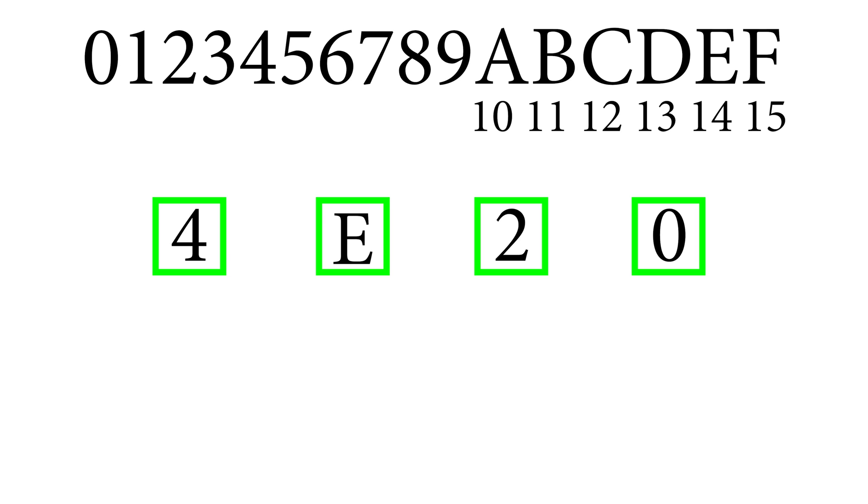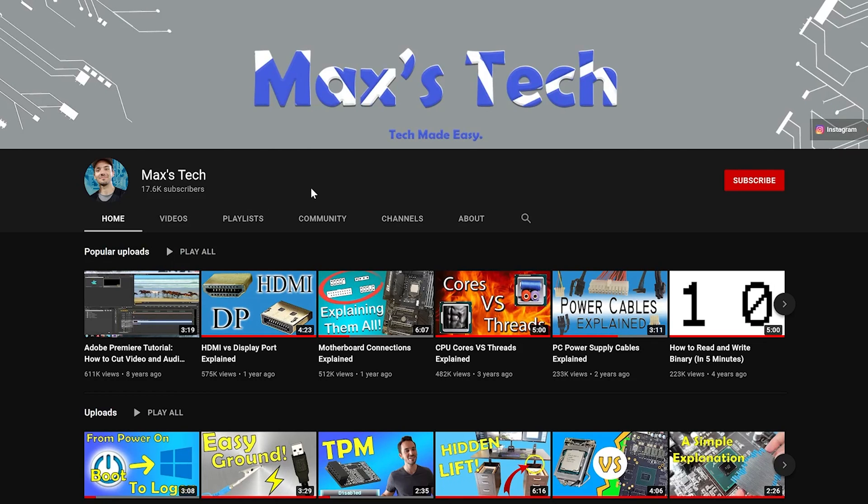So this ends up being 4E20 and in hexadecimal 4E20 is equal to 20,000. And you might wonder why I picked 20,000 in this case and it's actually because hopefully when you're watching this video I'm past this but I am trying to reach 20,000 subscribers. So if you guys could please try to subscribe if you like videos like this.